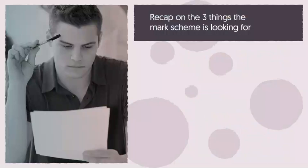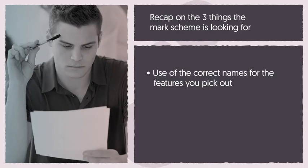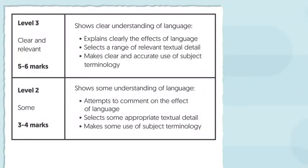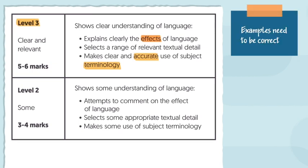It's a good idea to recap on the 3 things the mark scheme is looking for: the use of the correct names for the features you pick out, examples of those features in the text, and a comment on effect. If you take a look at the mark scheme grid, you'll notice that to get into level 3 your terminology use needs to be accurate and your examples need to be correct. It's also important to note that level 3 asks for the effects of language, rather than effect, which is level 2.